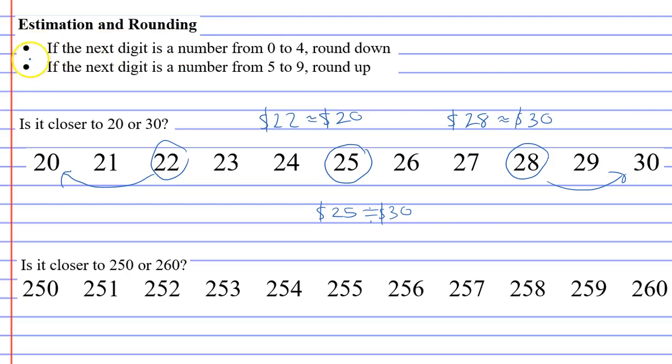What does that mean? Well you'll notice zero to four are these numbers and all these numbers would round down to twenty. And the numbers that are five to nine are these numbers, and you'll notice that all of these numbers will round up to thirty. That's how you can tell whether you round up or down by looking at the next digit.